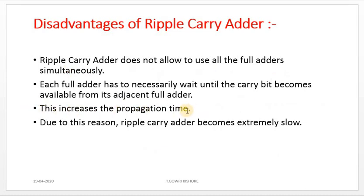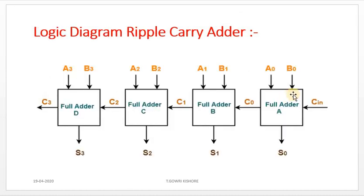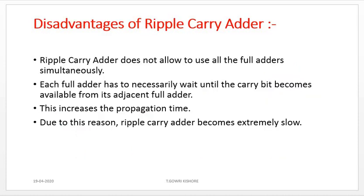Because each stage must wait, it takes more time, and due to this reason, the ripple-carry-adder becomes extremely slow. All full-adders cannot work simultaneously, which makes it very slow.